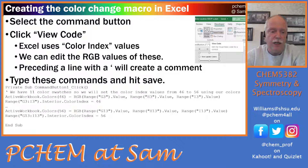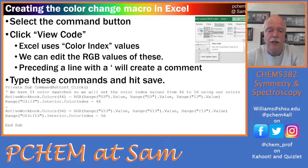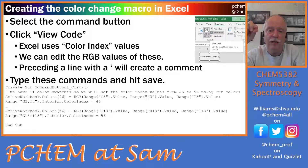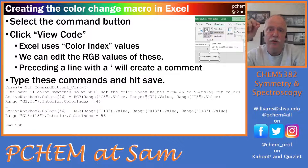The code reads: ActiveWorkbook.Colors(46) = RGB(...) — so we're setting the color for slot 46 on the active workbook. We pull the RGB values from cells G3 (the red value for the first color swatch), H3 (the green value), and I3 (the blue value). Close the parenthesis and that defines the RGB color for slot 46.